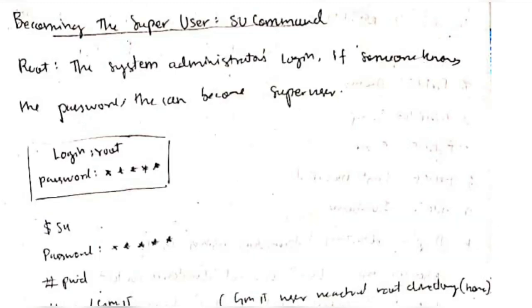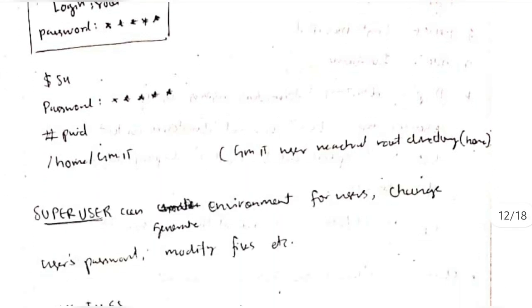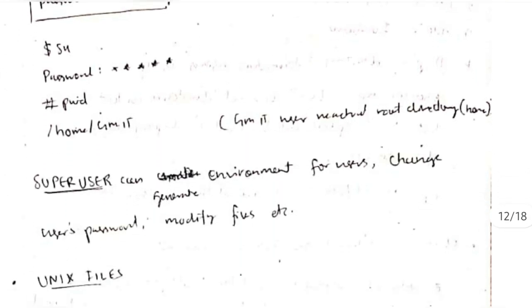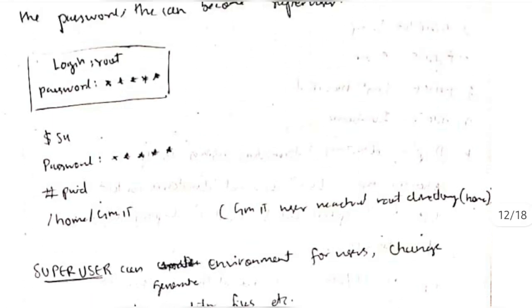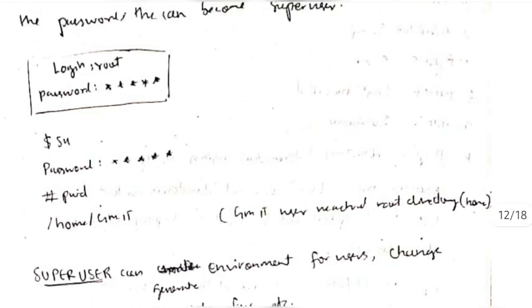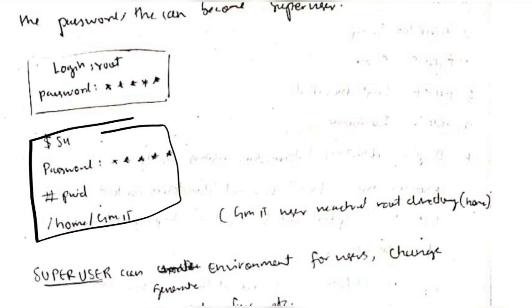What is a super user? Super user is just the same as the owner of the file — if you know the password, you can become the super user. Features of the super user: it can create the environment for users, change and generate user passwords, and modify files. Like what all the owner can do, the super user can also do — the person just needs to know the password.